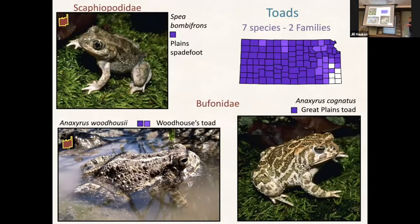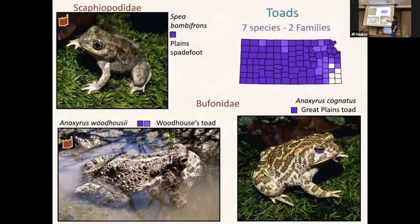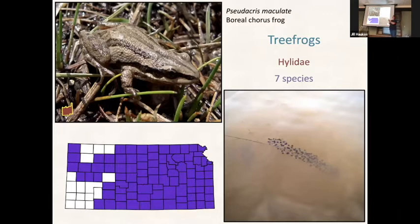We have one spadefoot toad here on Konza, but most spadefoot toads are in western Kansas. They breed in intermittent pools that fill up with water, they breed, and then they're done. Anything on Konza will have the little Konza map. The most common toad by far is the Woodhouse's toad, pretty much over the whole state. For frogs we have several families - tree frogs are my favorites. This is one of the most common tree frogs out here, and if you go outside you'll probably hear them right now.